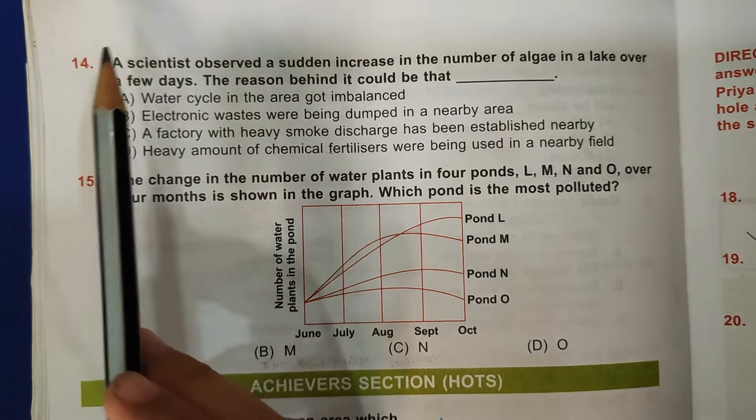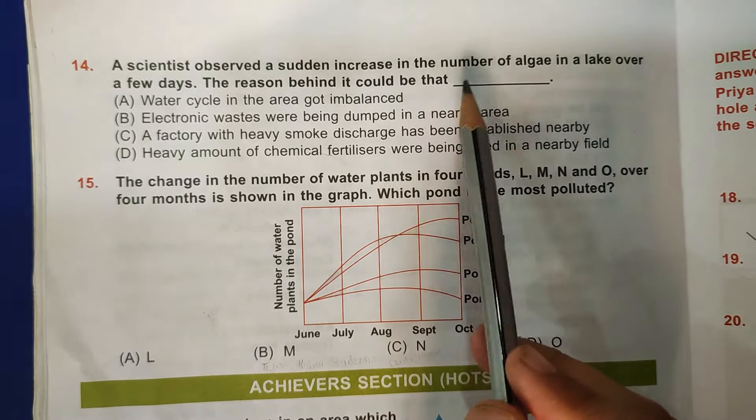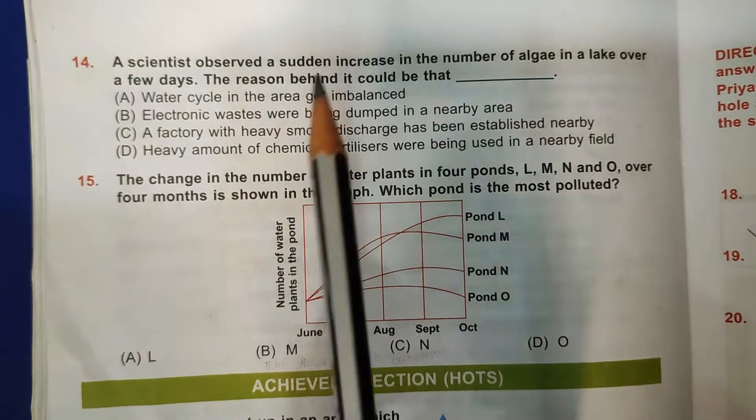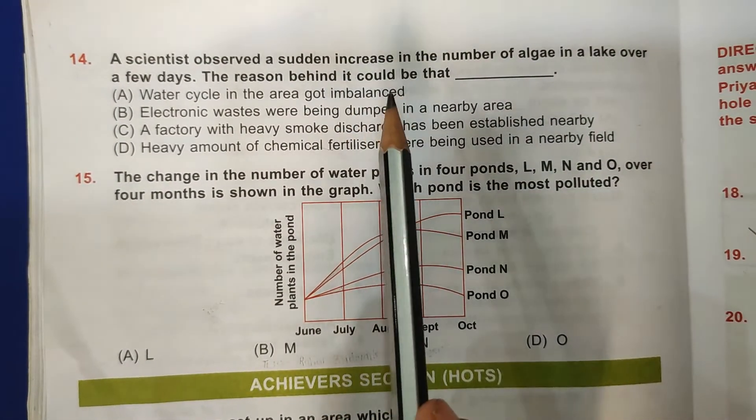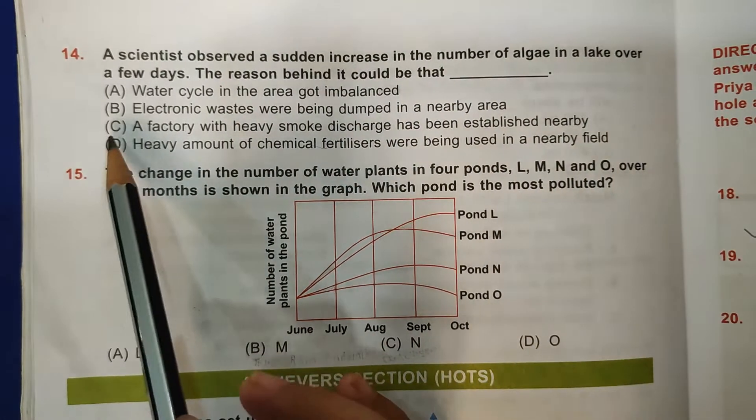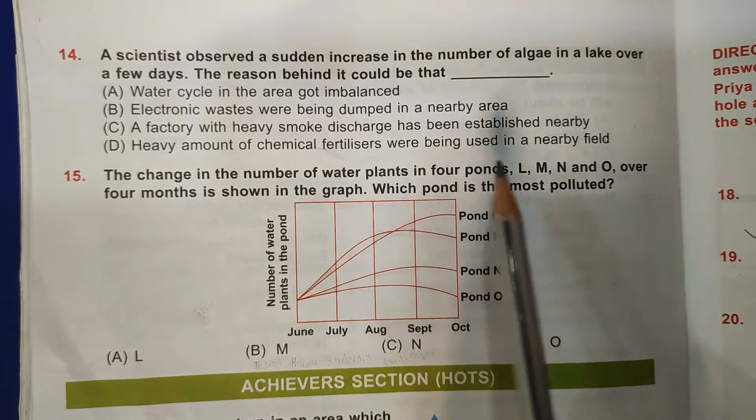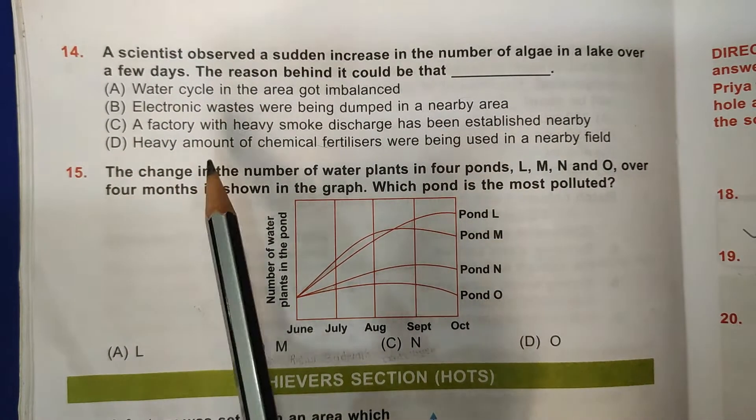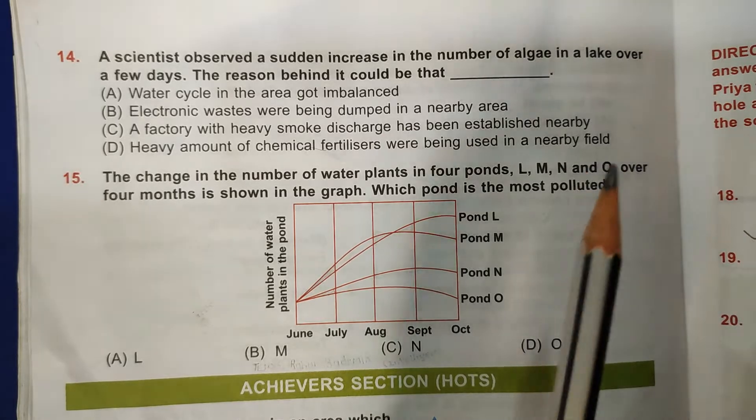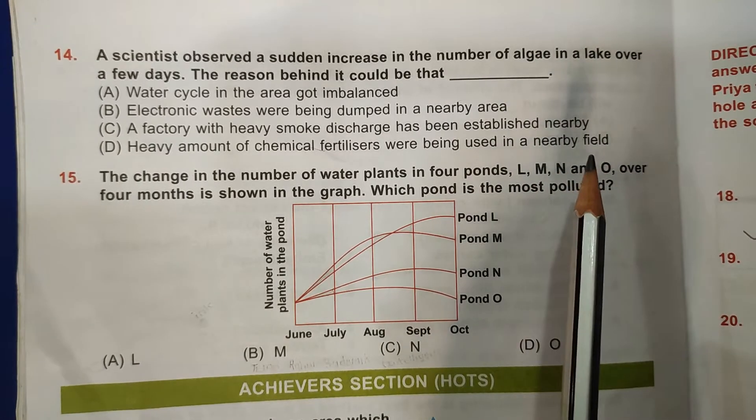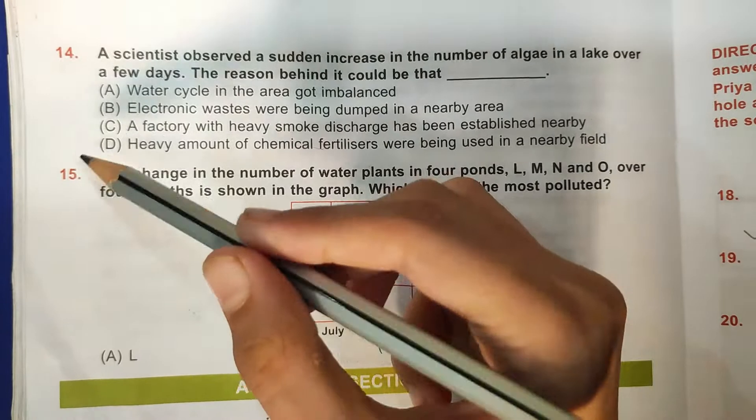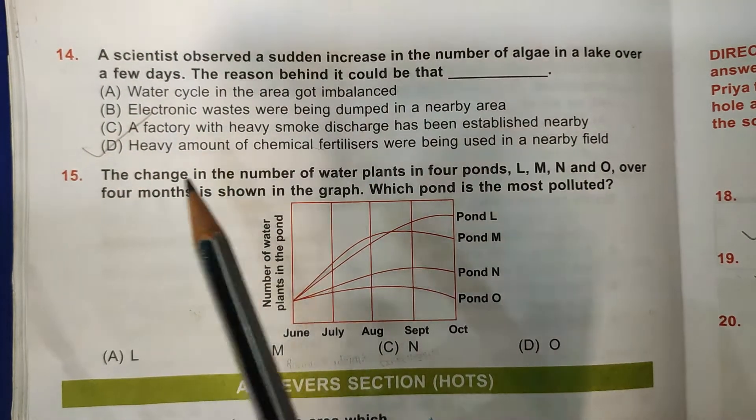14th question: A scientist observed a sudden increase in the number of algae in a lake over a few days. The reason behind it could be that: A: Water cycle in the area got imbalanced - no. B: Electronic waste were being dumped in a nearby area - no. C: A factory with heavy smoke discharge has been established nearby - no. D: Heavy amount of chemical fertilizers were being used in a nearby field - yes, it can be there because chemical fertilizers are rich in nitrogen and phosphorus. Nitrogen content of water body favors algae growth, so D is the correct answer.